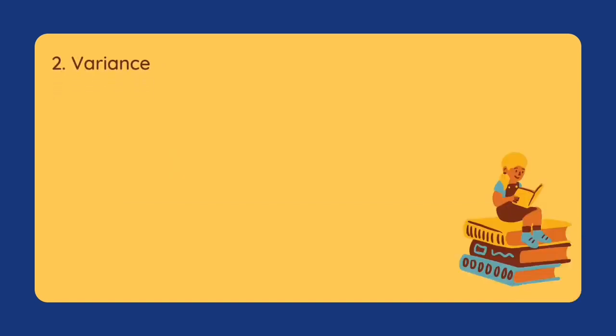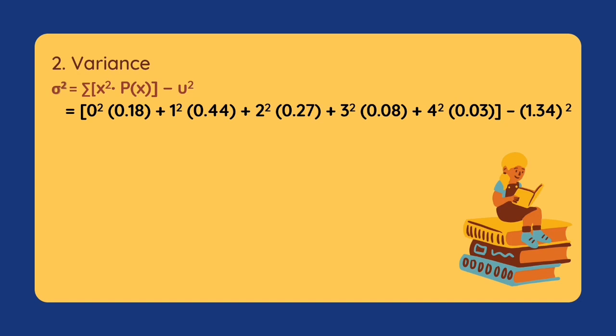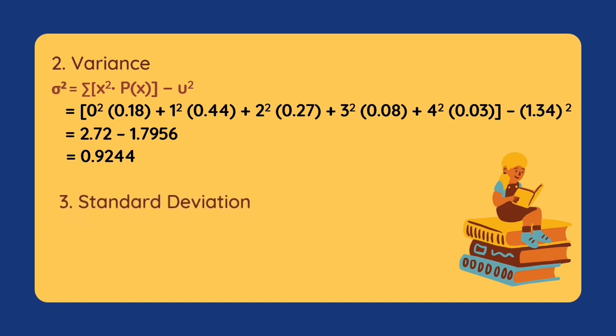Now let's proceed on solving for the variance. Following the formula: 0²×0.18 + 1²×0.44 + 2²×0.27 + 3²×0.08 + 4²×0.03, then subtract the square of the mean, which is 1.34. We have 2.72 minus 1.7956, giving a variance equal to 0.9244, or approximately 0.92. The standard deviation is the square root of 0.92, which equals 0.96.